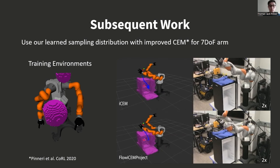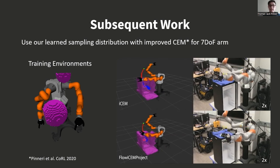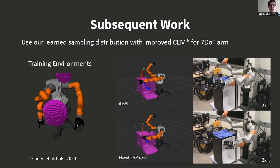We have also since extended our approach by incorporating it with another sample-based MPC method, improved CEM, and performed an additional experiment with a 7 degree of freedom arm, including using a real robot.